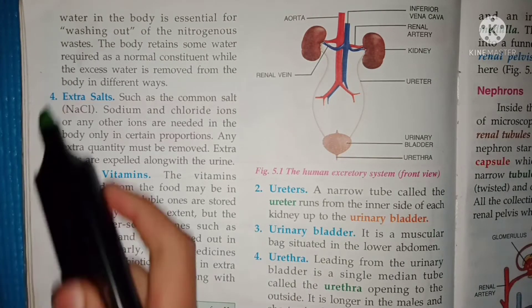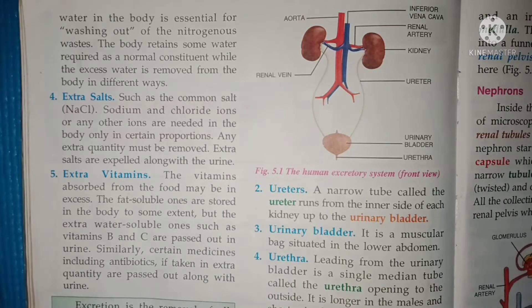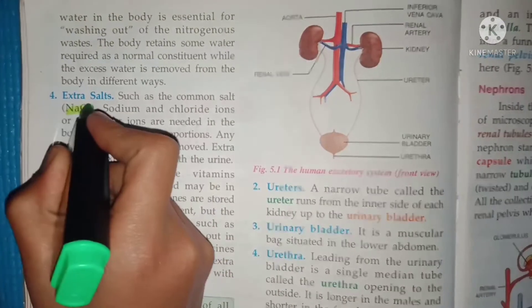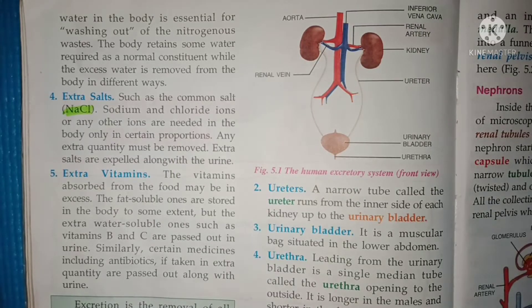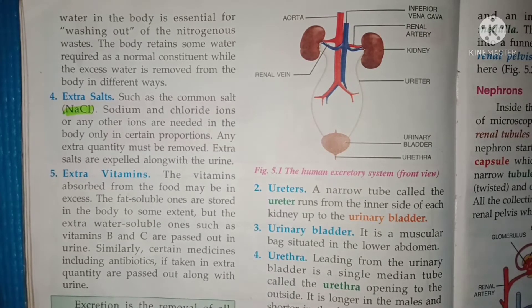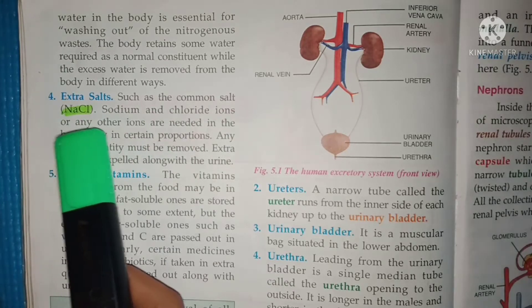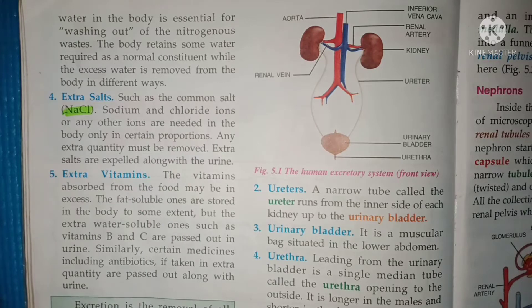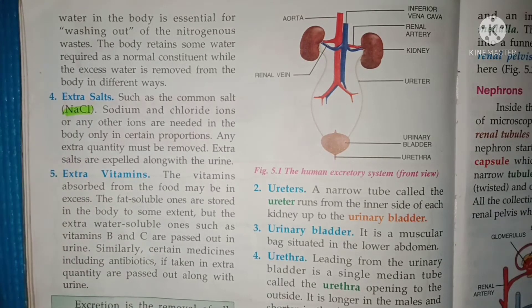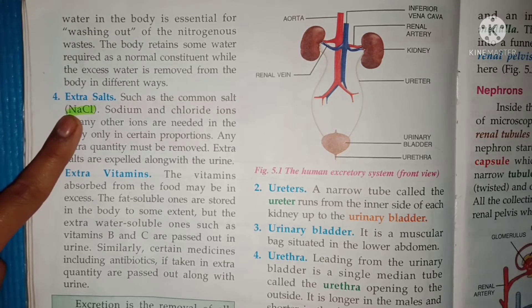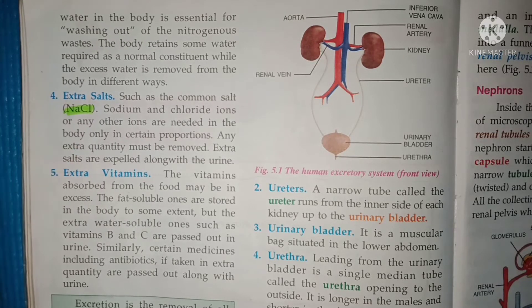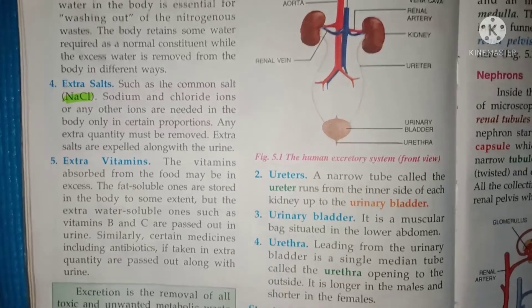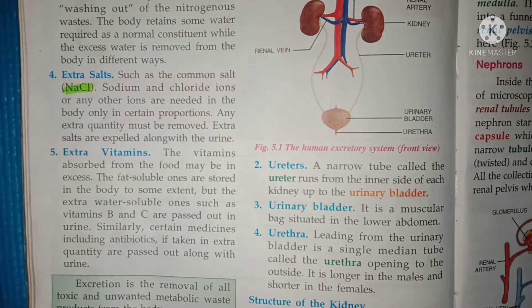The fourth substance that must be excreted is extra salt. The symbol of salt is NaCl, which contains sodium and chlorine. Sodium, chlorine, and other ions are needed in our body only in certain proportions — any extra quantity must be removed. Extra salt is expelled along with the urine, because urine also contains salt.